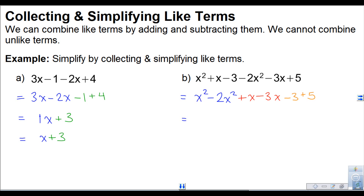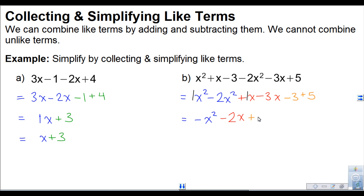Now I'll combine the like terms. There's an invisible 1 in front of x squared, making it 1x squared minus 2x squared. So 1 minus 2 gives me negative 1, and I write negative x squared. For the x terms, there's also an invisible 1, so it's 1x minus 3x, which gives minus 2x. And negative 3 plus 5 gives plus 2.